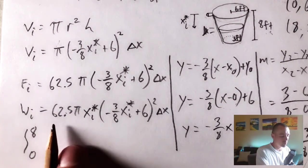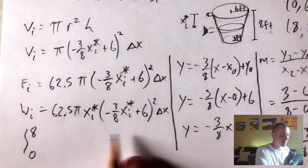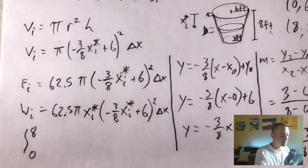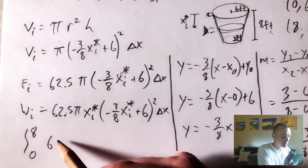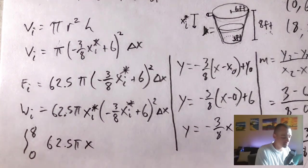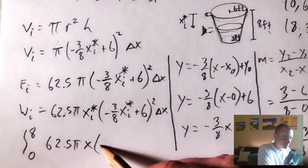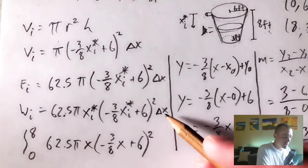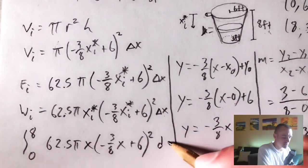And then we integrate this function here, except we would change it to be in terms of variables that actually make sense in an integral. So that would basically just mean 62.5 pi times X instead of XI star, negative three eighths X plus six squared, and then delta X is just going to change to DX. So then we should just be able to integrate this integral.